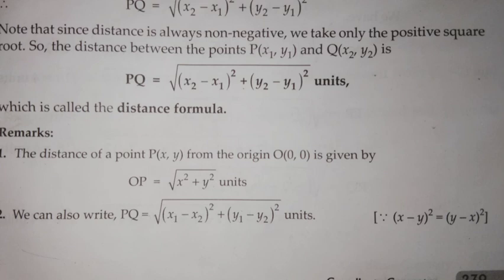In the remarks, we see you can also write x2 minus x1 and y2 minus y1 as y1 minus y2 and x1 minus x2 because you will get the same answer. If you want to know the distance of a point P from the origin, you can directly write the distance as square root of x2 plus y2 units. Make sure to learn by heart this formula. This is called distance formula.